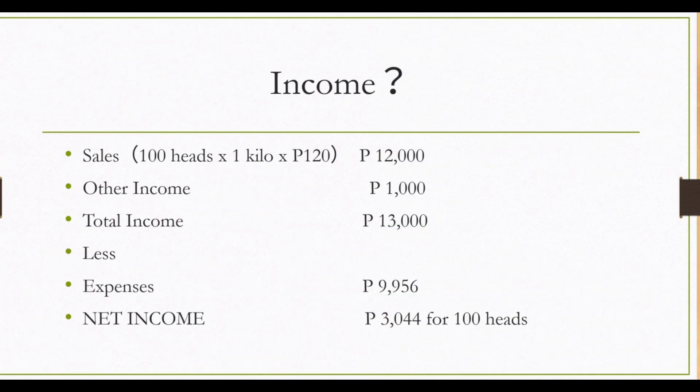Now let's check if we make money in raising chickens. Summing up all the expenses, the cost components total 9,956 pesos for 100 heads of chicken. We have revenue or sales of 12,000 pesos, plus other income from the sale of liver, gizzard, and intestines, giving total income of 13,000 pesos. For 100 heads of chicken, you will earn a net income of 3,044 pesos, or 30 pesos per chicken sold.